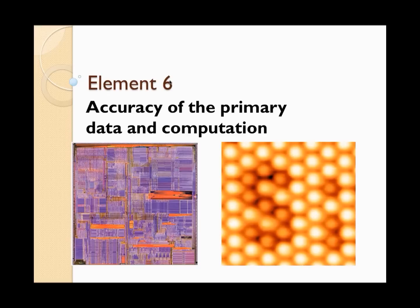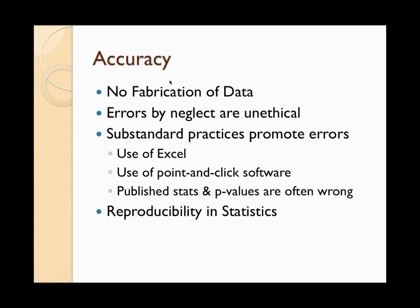Element six is accuracy of the primary data and computation. Accuracy is the cornerstone of validity — without accuracy, statistical inferences can become meaningless. We should never tolerate the fabrication of data, but more commonly, errors and neglect can be equally harmful. Substandard practices promote errors, such as the use of Excel and point-and-click software. A study in 2004 found that about 12% of p-values in Nature and the British Medical Journal are incongruent with the test statistics. Reproducibility — meaning analytical results can be reproduced from the data via an openly disclosed computational process — is a great way to improve accuracy as well as openness and transparency.